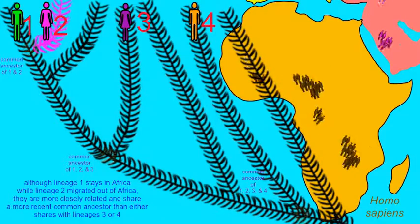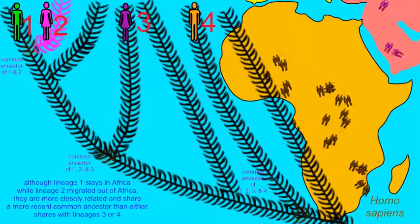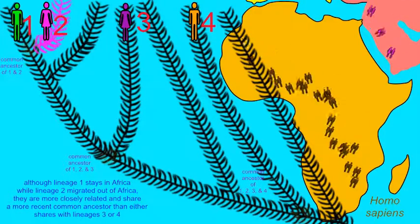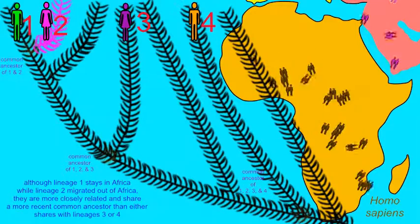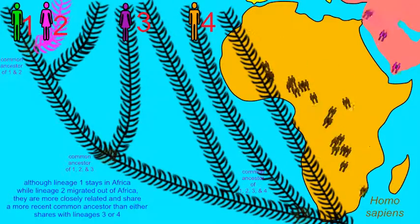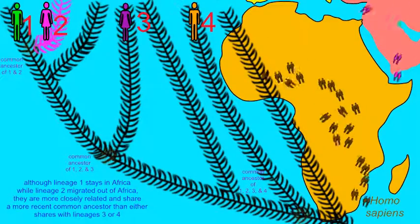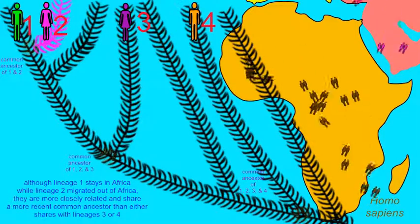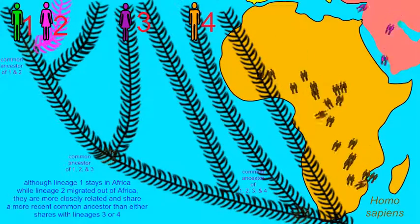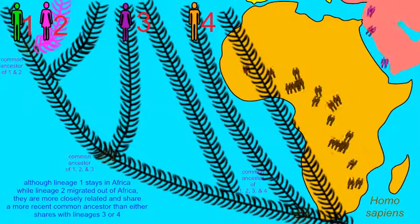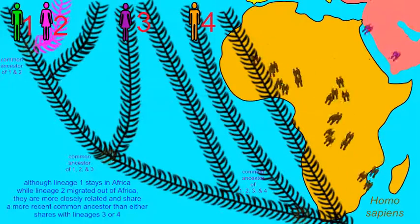It is possible to find more genetic differences between two individuals living relatively close to each other within Africa than between individuals who live in England and China, given the great depth of time that individuals lived in Africa, and thus the deep branching of the family tree occurring only in Africa.